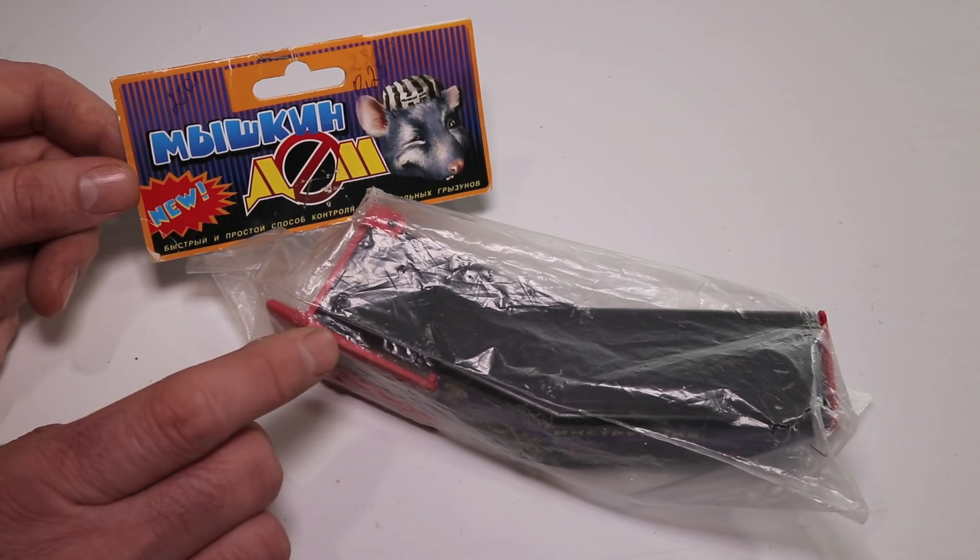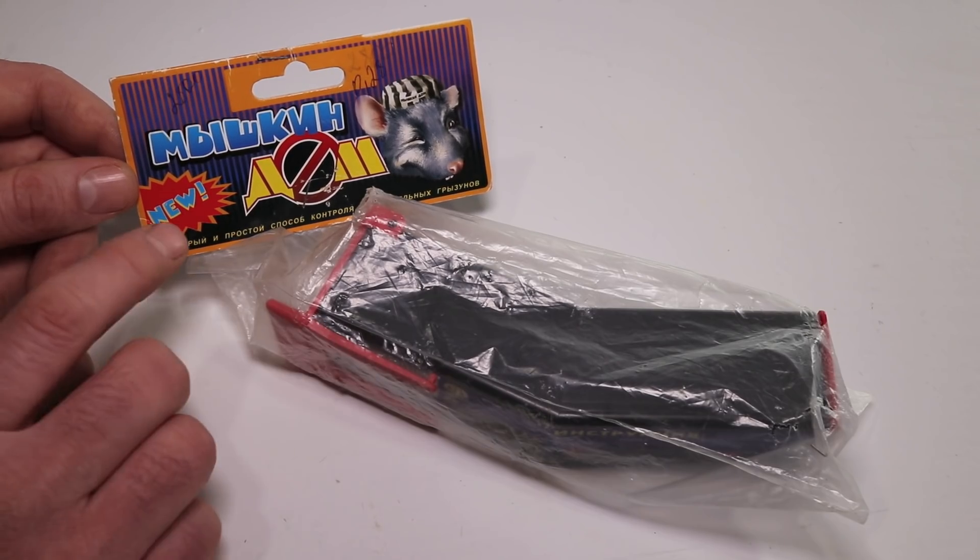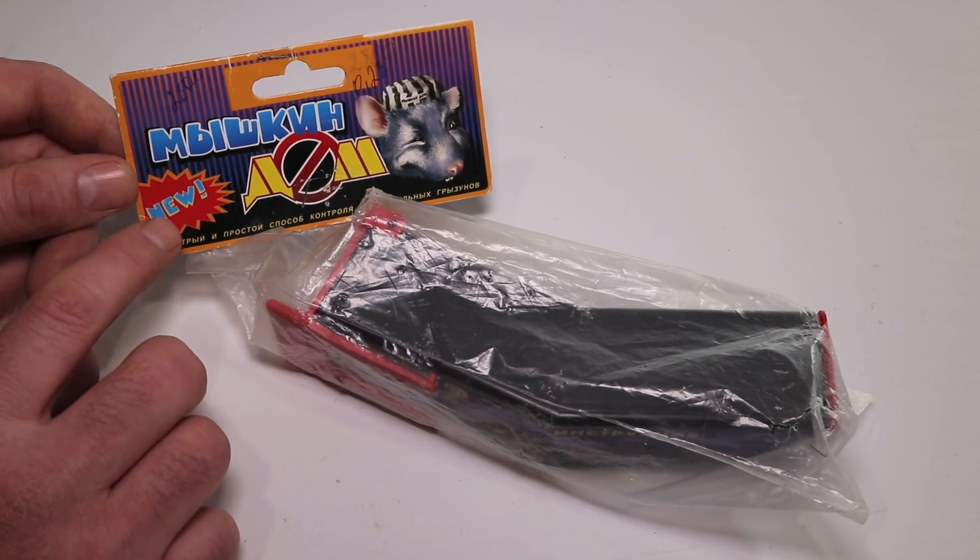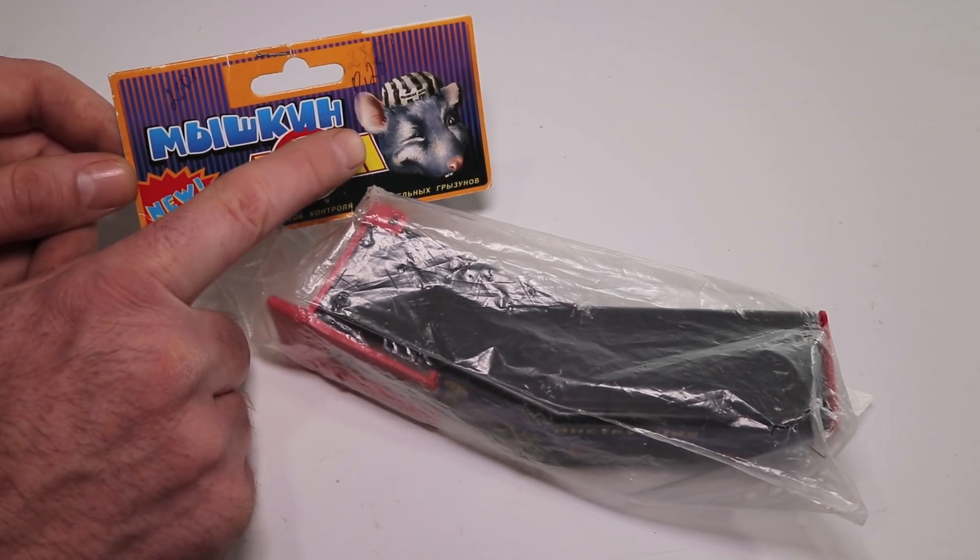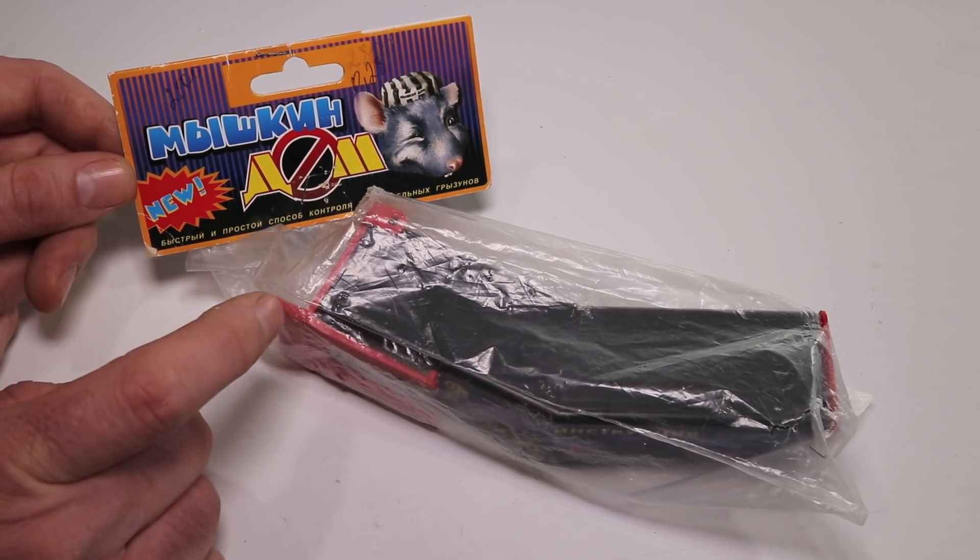This is a tip trap, a live animal trap that looks interesting. I can't read any of the label except it says 'new', so if you know what this says, let me know. It's also printed on the little prison hat of this mouse. Let's take it out of the package and see how it works.